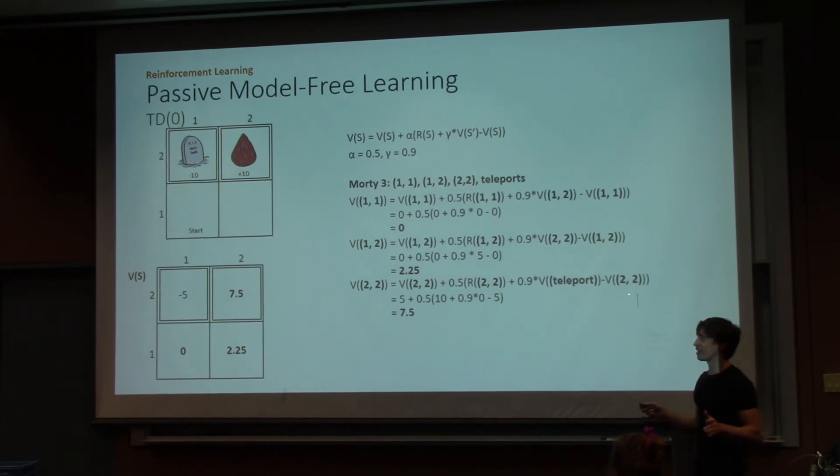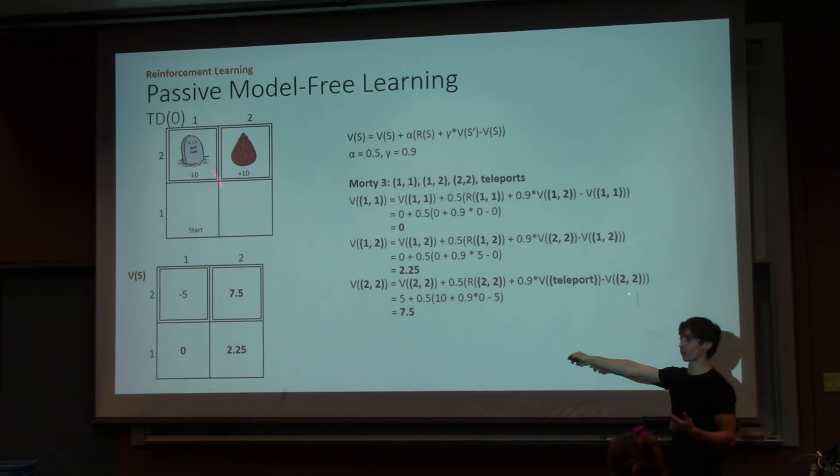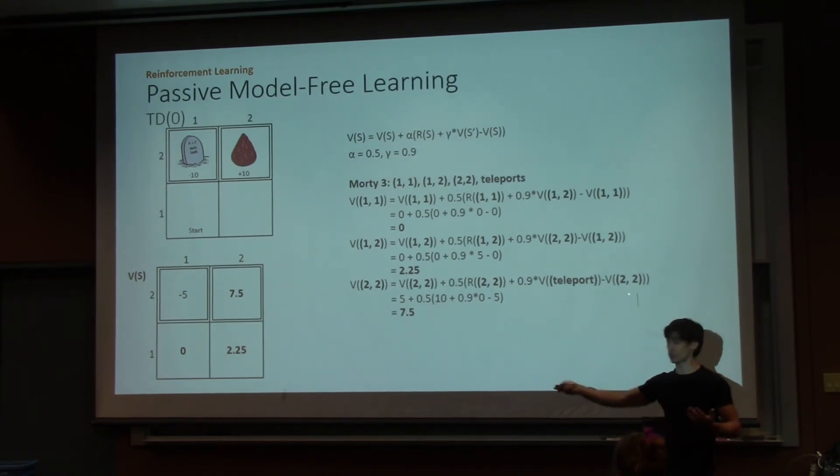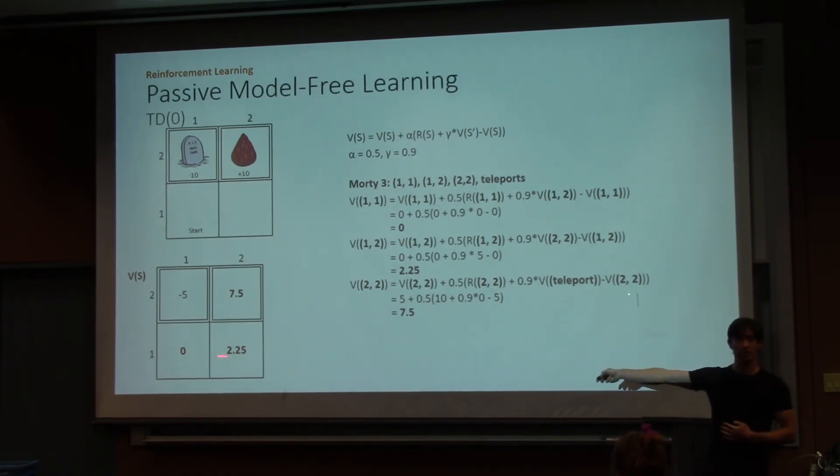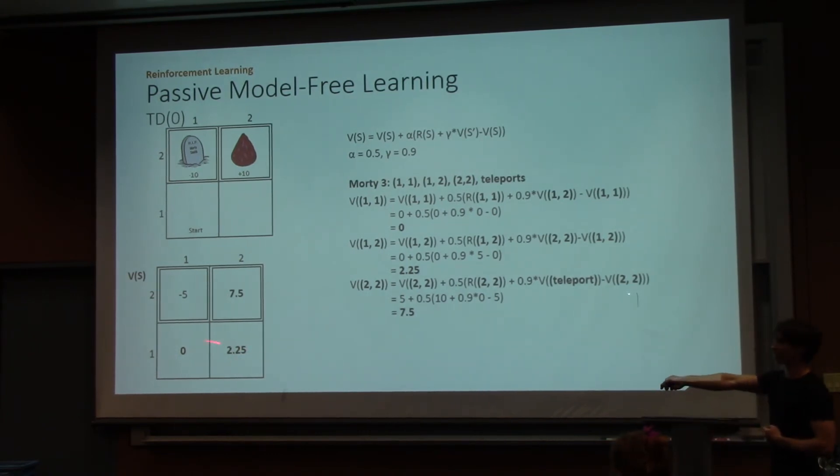So, you can see that even though we're now using the information that we get from each next state, it actually takes a few runs through, and we have to see each state multiple times in order for all of these values to get backed up. Because so far, we still think that 1-1 has a value of zero. Yes? Should the bottom right corner be 2-1? This is 1-2. They're indexed by this. I tried to keep it consistent with what you guys had already seen. I'm not a fan of this indexing value.